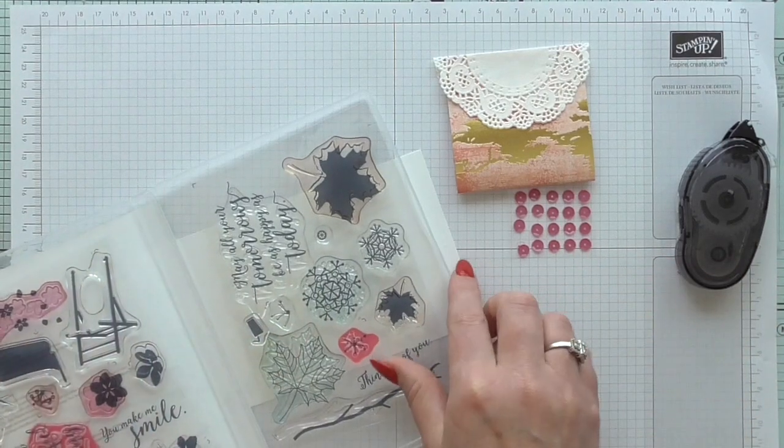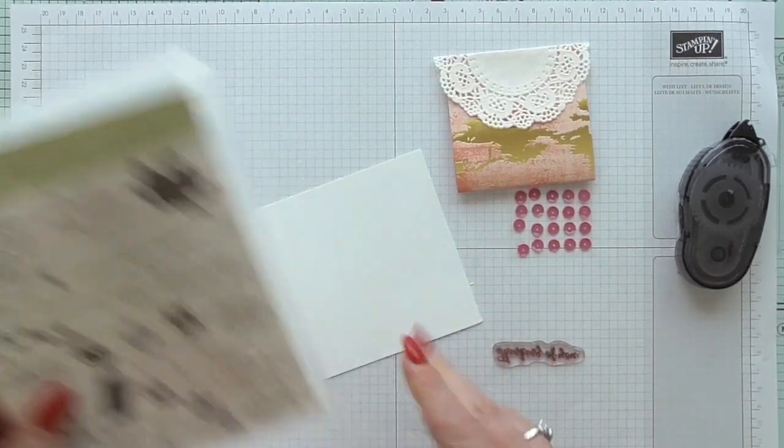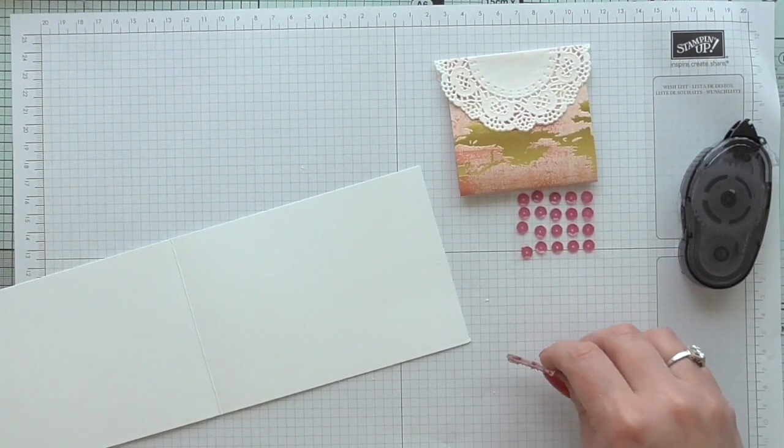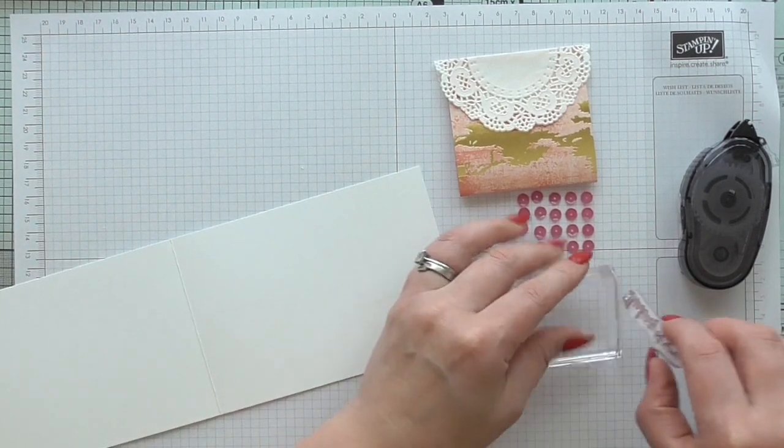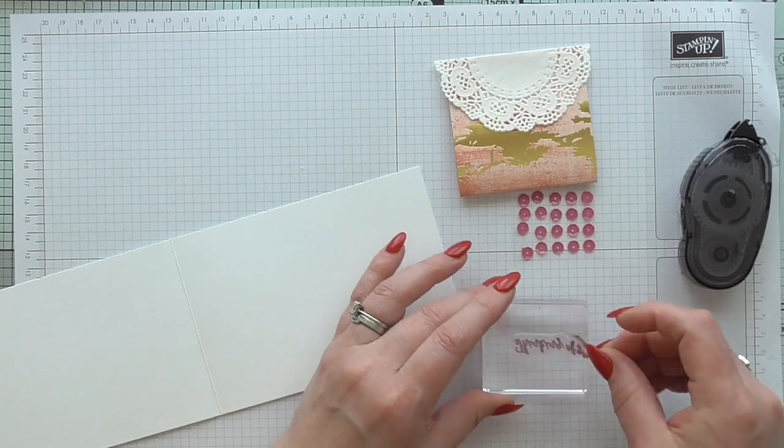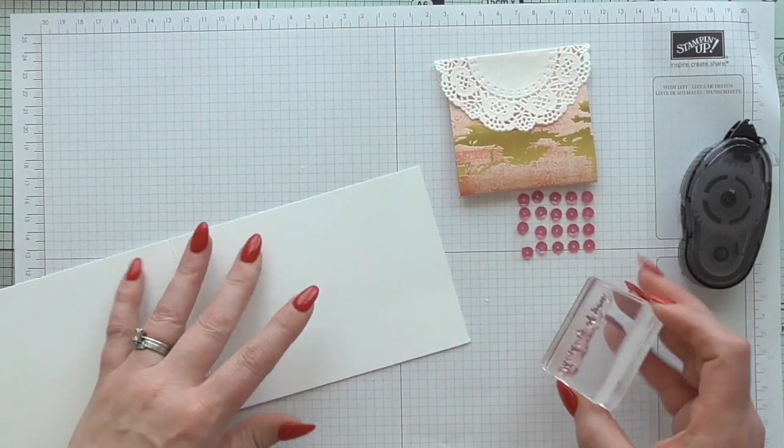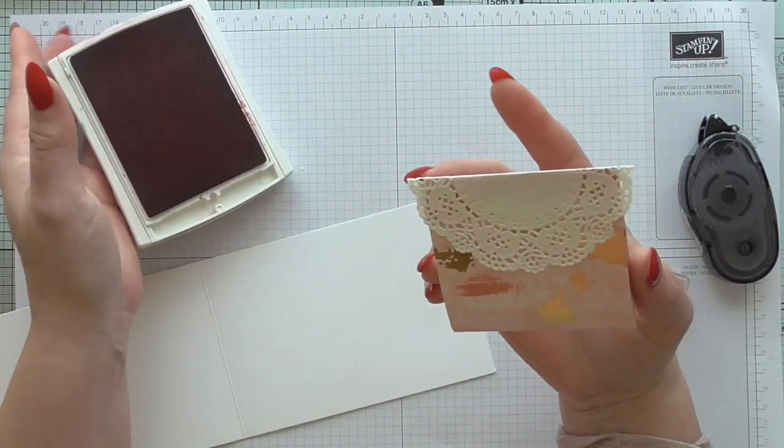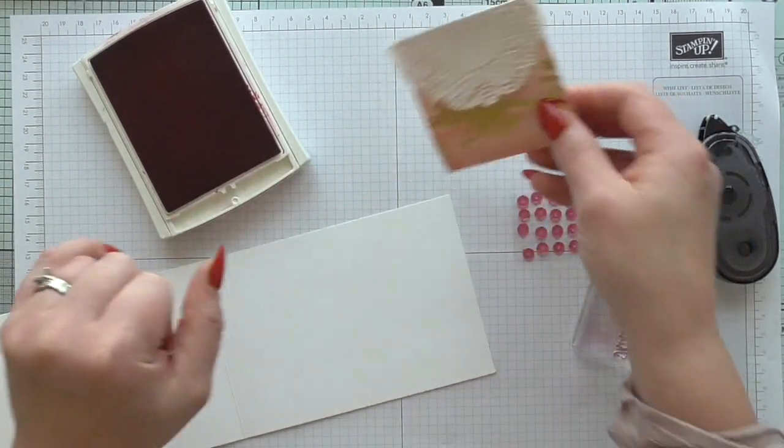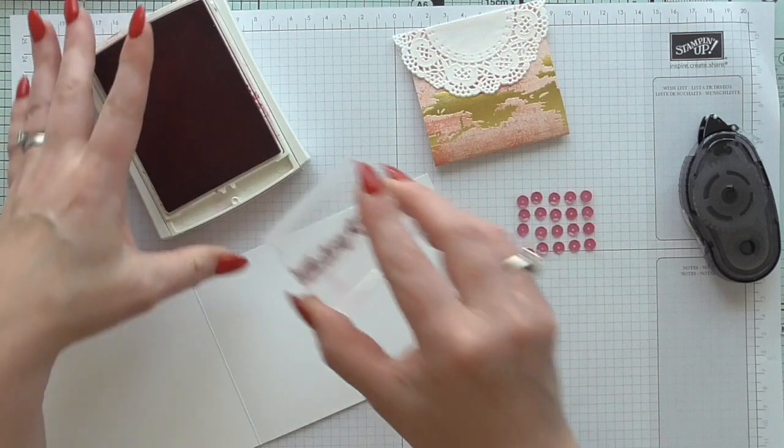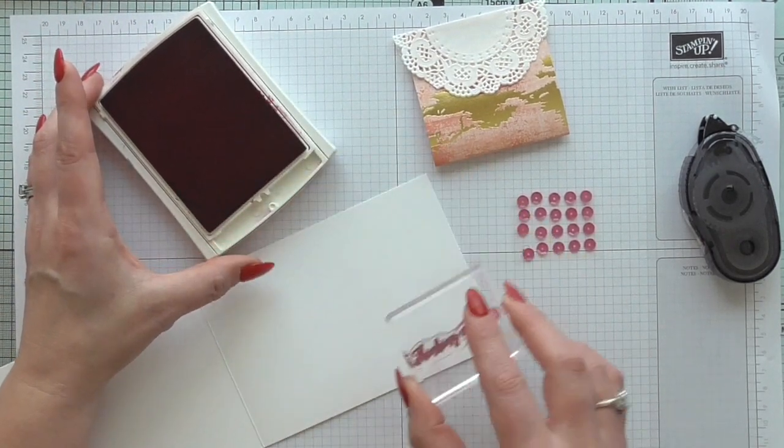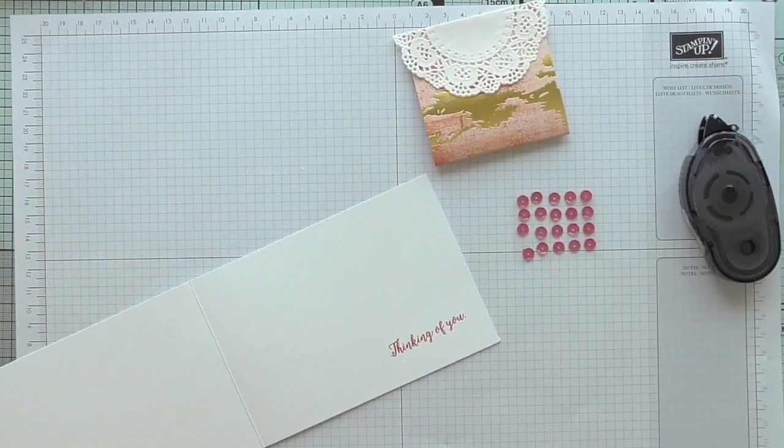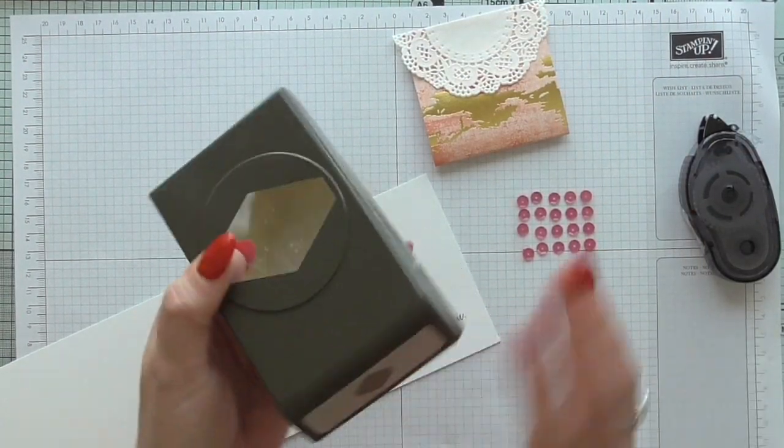Yes, thinking of you, it'll fit and it'll look pretty. Just make sure my good paper's not sliding all over the place. So I'm going to mount that on a block. I'm not too worried if it's straight because I'm going to punch it out. And I'm using Melon Mambo which is in the DSP, it's not on this particular sheet but it's in the paper stack. This is Calypso Coral. So I'm going to ink up that lovely sentiment and stamp that there. Thinking of you, beautiful font, I absolutely adore that.